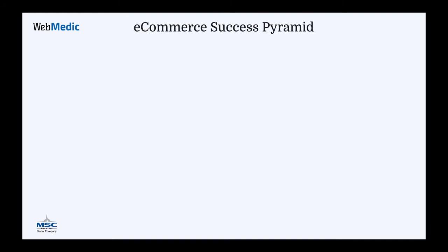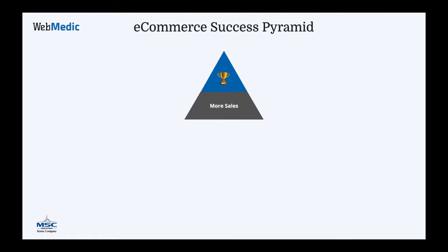Here is the e-commerce success pyramid — a way to visualize how you can grow your online business. Everybody wants success online, which could mean different things, like having a global brand with international presence. But whatever you want, you cannot achieve it without more sales. And you cannot increase your sales unless you have a good shopping experience — meaning on the cart and checkout, you've answered people's objections and have a smooth checkout so people can shop easily.